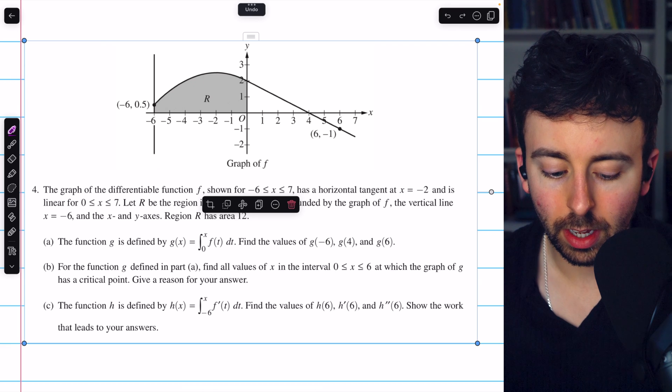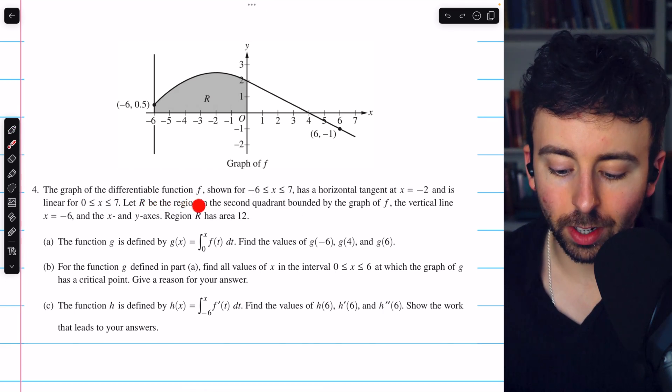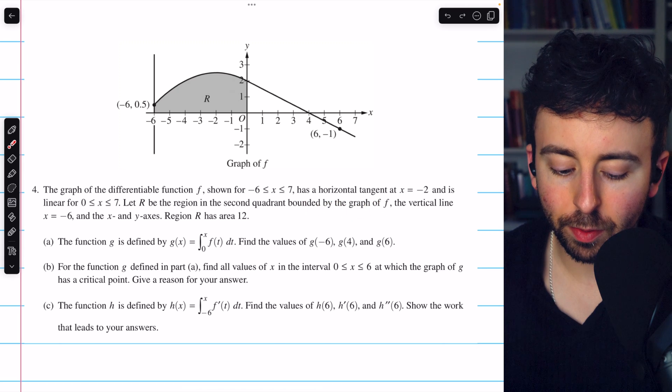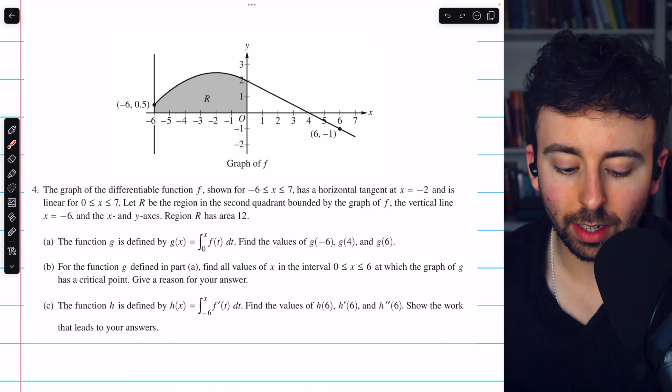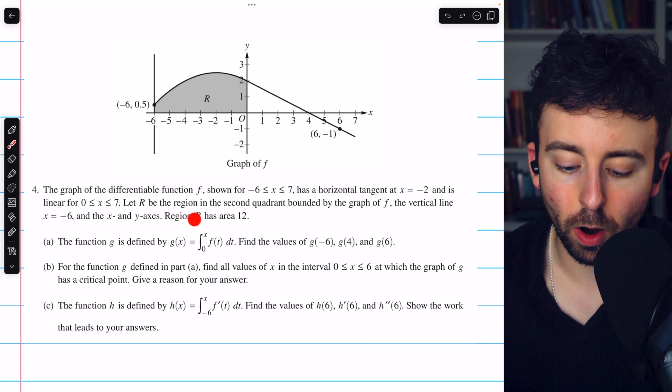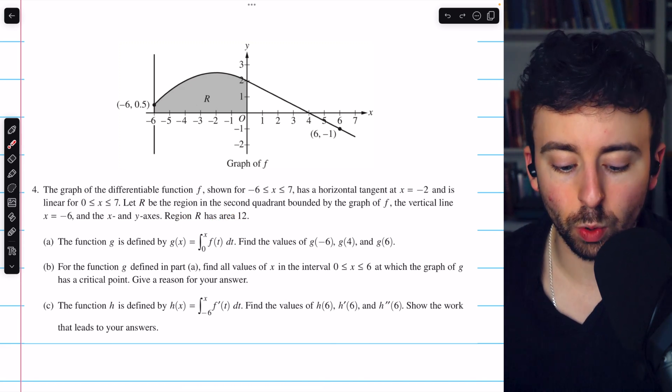In fact it is. Let R be the region in the second quadrant over here, bounded by the graph of f, the vertical line x equals negative 6, and the x and y axes. This region R has an area of 12.